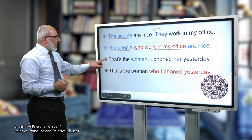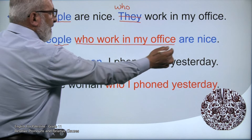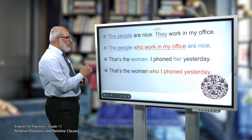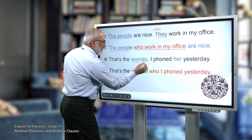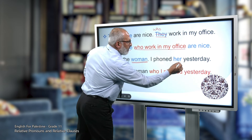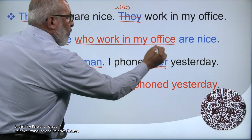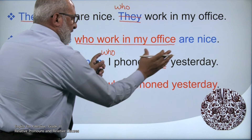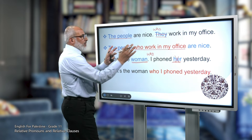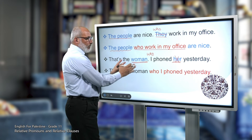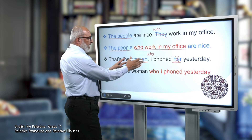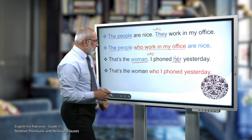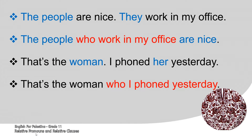Another example: 'That's the woman. I phoned her yesterday.' Again, the common words are 'woman' and 'her.' We omit the pronoun 'her,' put the relative pronoun 'who' at the beginning of the second clause, and move it directly after the word it describes. So it becomes: 'That's the woman who I phoned yesterday.'